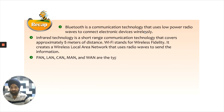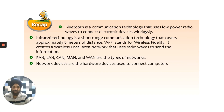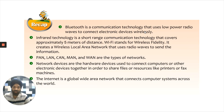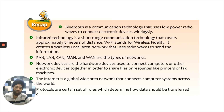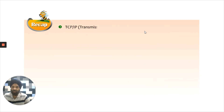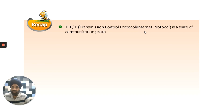Other network types are PAN, LAN, CAN, MAN, and WAN. Network devices are the hardware devices used to connect computers and electronic devices together to share files or resources like printers or fax machines. The Internet is a global wide area network that connects computer systems across the world. Protocols are a set of rules which determine how data should be transferred over networks, compressed, and presented on the screen. TCP/IP — Transmission Control Protocol and Internet Protocol — is a suite of communication protocols used to connect various computers on the Internet.